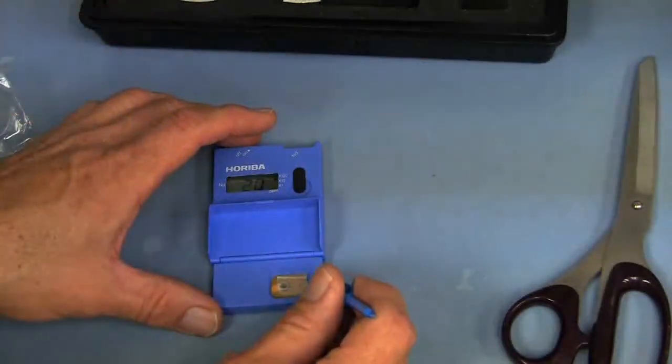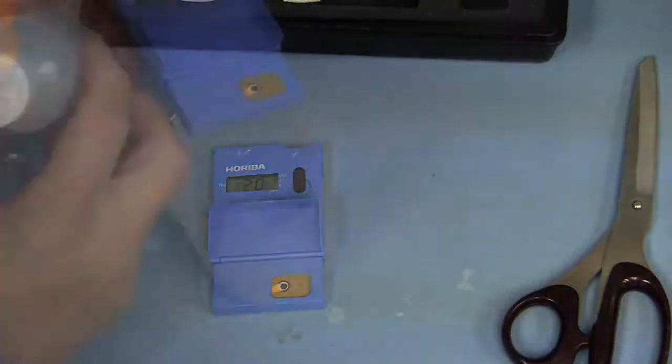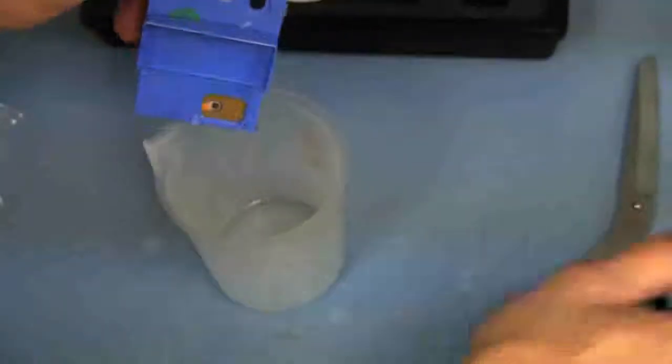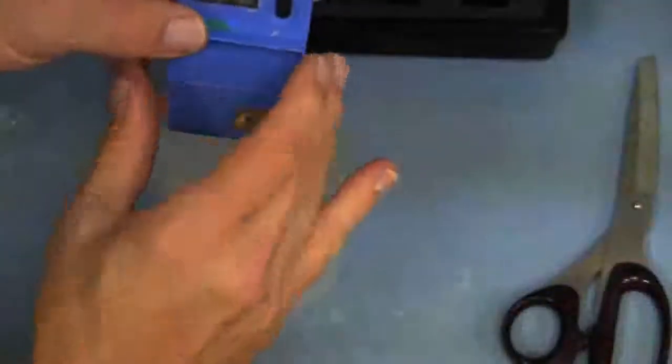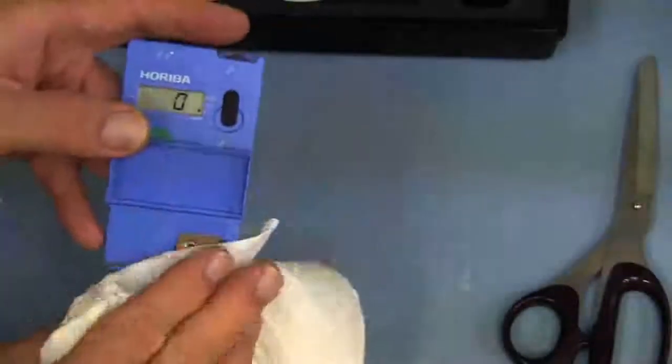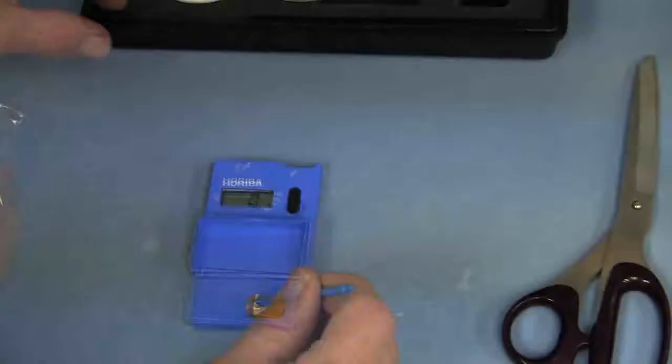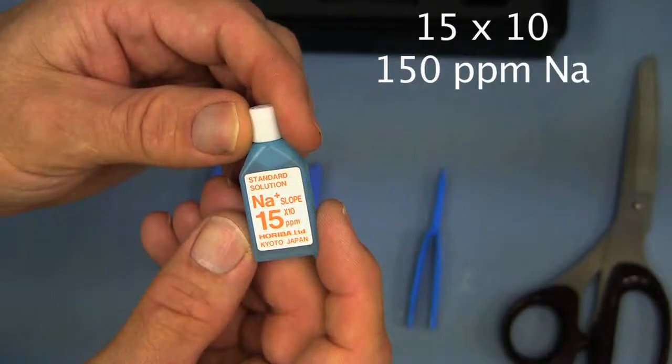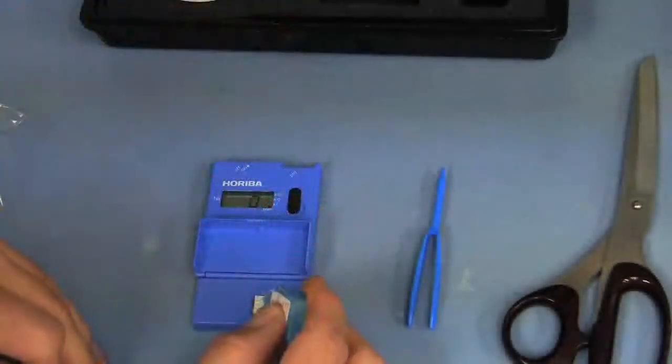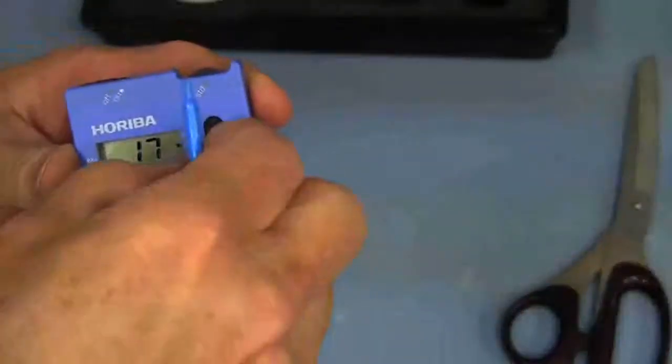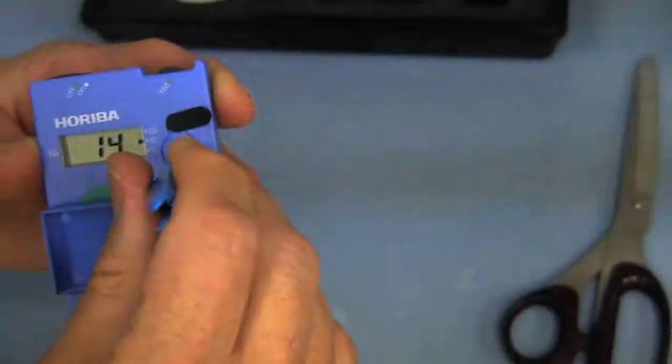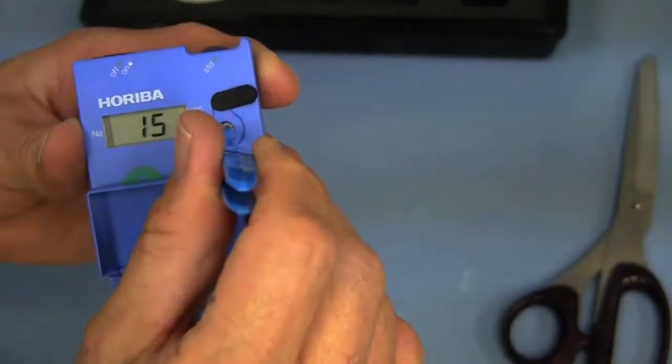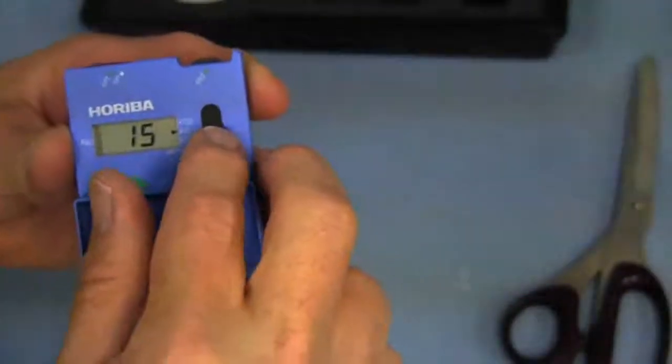Then for the second calibration, we need to clean the meter off. Just rinse it off with distilled water. It takes a couple of seconds. Then we will blot it dry with a clean paper towel, just very carefully to get the moisture off. And then repeat the process with the 15 times 10 solution, or 150 part per million sodium solution. In this case, after you drop the drops on, we're not going to use that same standard control. We're going to use the slope control that's hidden behind that movable piece of rubber, and we'll adjust that to 15 times 10. And there you go. The calibration is done. We're ready to use the meter.